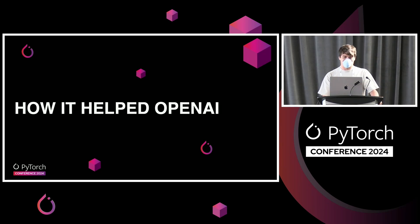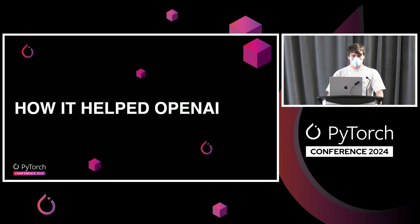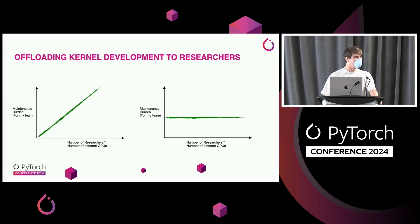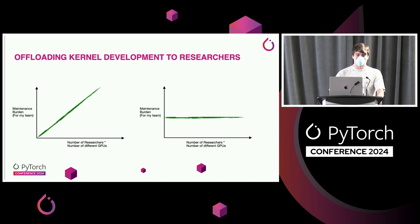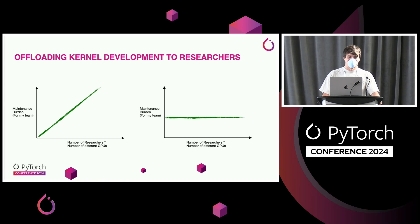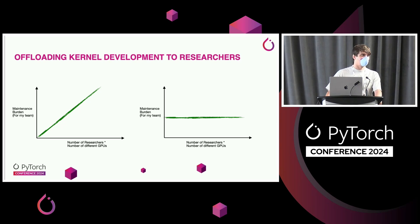I want to spend a couple of minutes on how Triton helped us at OpenAI. I manage not only the part that maintains Triton, but also the part that uses Triton to write kernels for our largest language models, including GPT-4 and beyond, and Triton has been a huge saving grace for the team. The key way it helped is it allowed us to offload kernel development to researchers. Before Triton, the kernels team had a maintenance burden that grew linearly with the number of researchers needing kernels and the number of GPUs to support. With Triton, a lot of that burden shifts to compiler developers and users can write their own kernels in a more self-serving way.